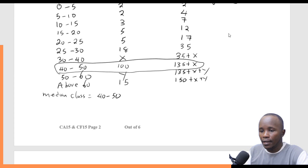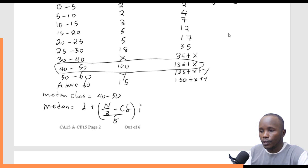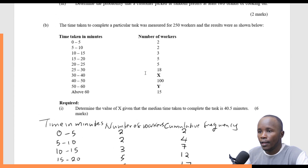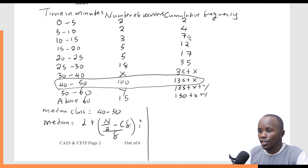The median is the same as the second quartile, so the median is given as L plus (N over 2 minus CF) divided by F, times I. We have to identify these values. From the question, the time taken was measured for 250 workers, which means if I add all the frequencies it should give me 250. Therefore N is 250, and L is the lower class limit of the median class.